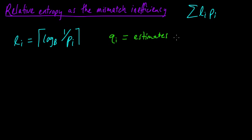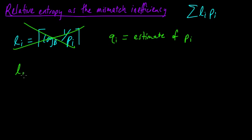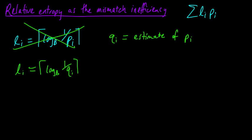Let's call our estimates Q_i. So Q_i is going to be our estimate of P_i, and we'll have a probability distribution of Q_i's, which will be our approximation of the true distribution. Our lengths are now going to be log base B of 1 over Q_i, rounded up to the nearest integer. But what happens to our expected codeword length? How bad do things get? We know if Q_i is not equal to P_i for all i, we're not going to be optimal anymore — so how much will our expected codeword length increase?